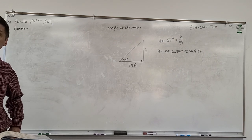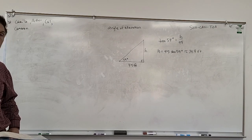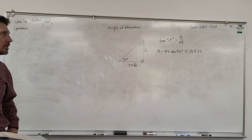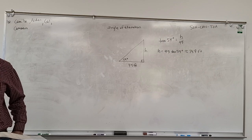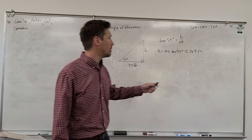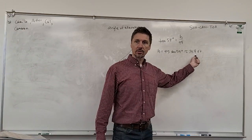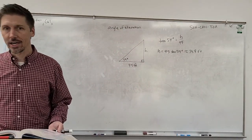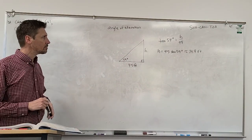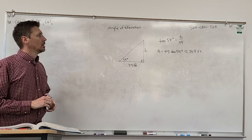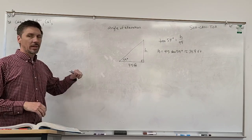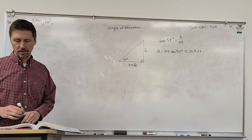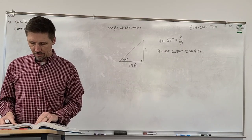Any questions about how we did that problem? Whenever you're doing those trig functions, do you have to use that squiggly line? That's not because of trig functions — I'm doing that because I'm rounding. The squiggly line just means that's an estimated value, not the exact value. Good question. Does everybody get angle of elevation?